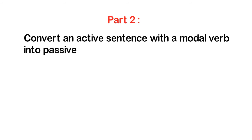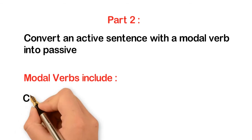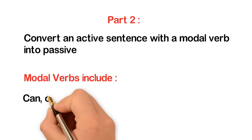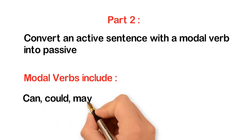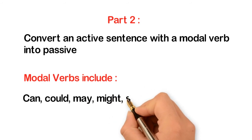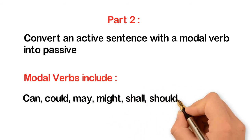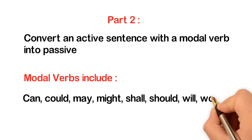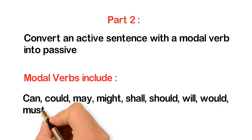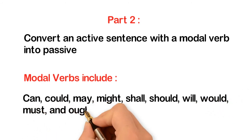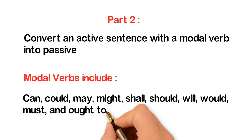Now let's learn how to convert an active sentence with a modal verb into passive. Modal verbs include: can, could, may, might, shall, should, will, would, must, and ought to.